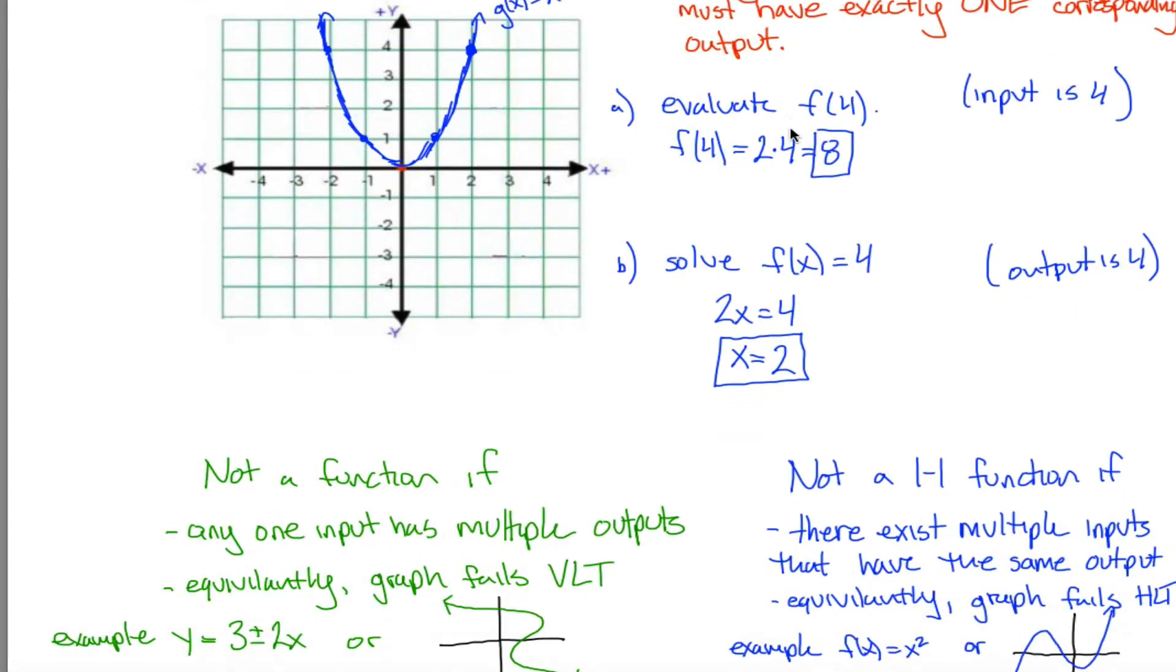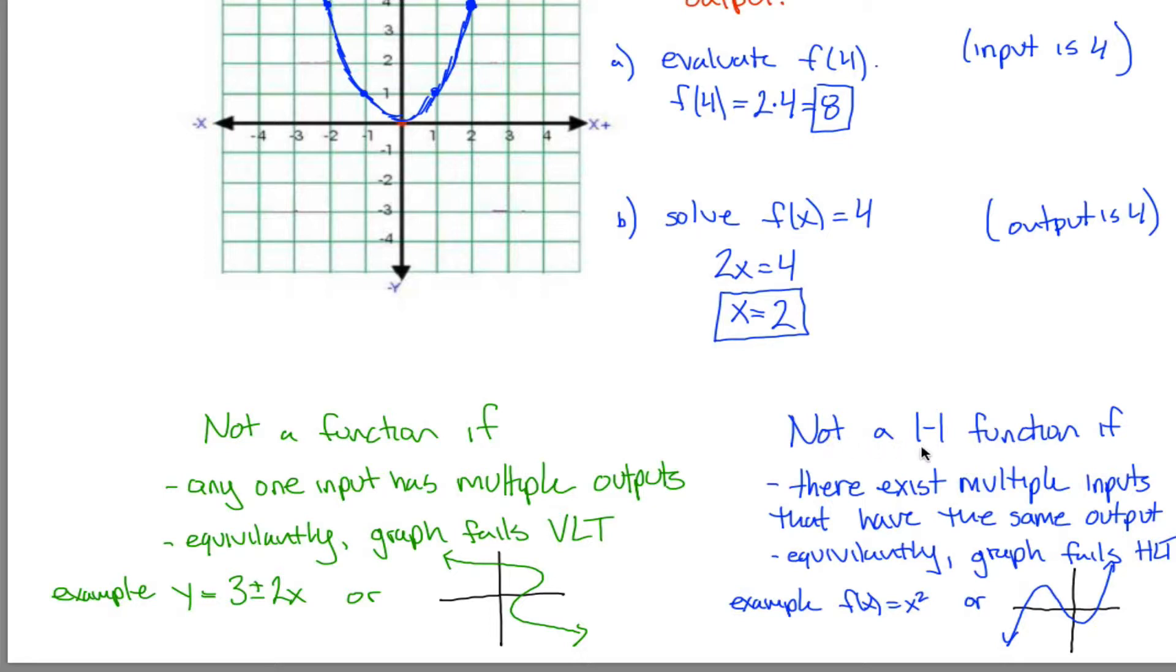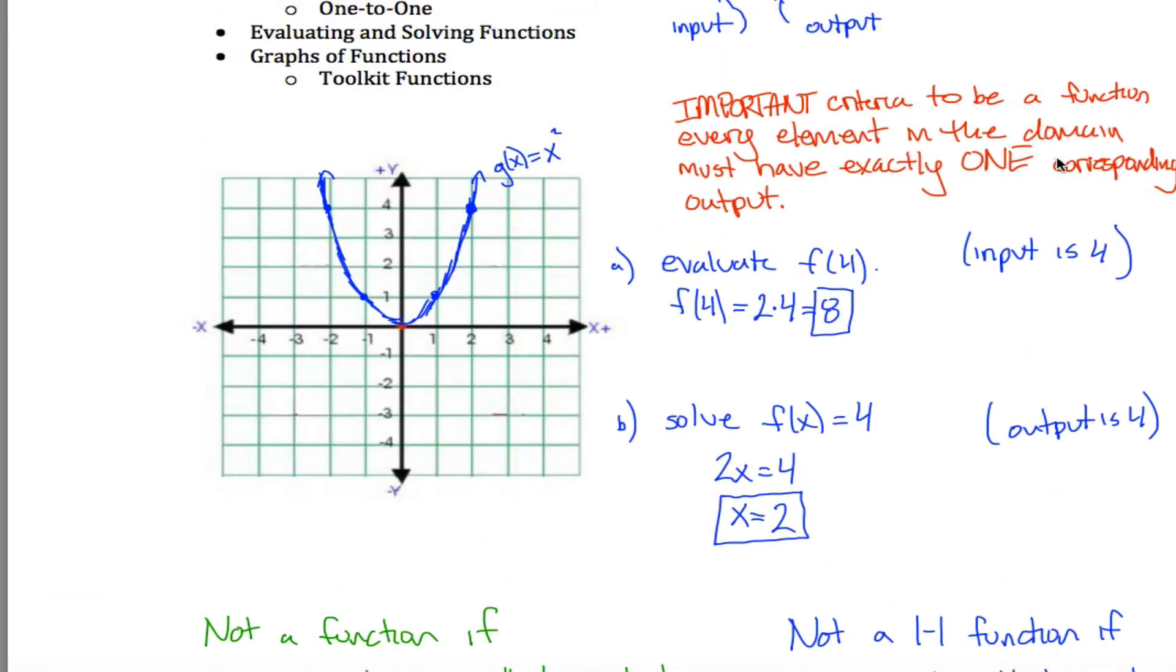Two more things and then I'll call this good. I think it's easier to think about what is not a function rather than what is a function and what is not 1 to 1 rather than what is 1 to 1. So here's a little bit of a summary there. Something is not a function if there's any one input that has multiple outputs. Equivalently, if the graph fails the vertical line test. So the vertical line test is a handy way for you to figure out if a relation is a function. What the vertical line test says is to pass the vertical line test, any vertical line you draw can intersect your graph in at most one spot. Put differently, if there's any vertical line that you can draw that intersects your graph in more than one spot like that vertical line I just drew did, what that means is this thing's not a function. And that makes sense if you think about what graphing means and how we graph functions. This is saying that for whatever this input is, whatever this x coordinate is, there's three different y values which are the outputs. So I have one input with multiple outputs. I'm failing this important criteria.